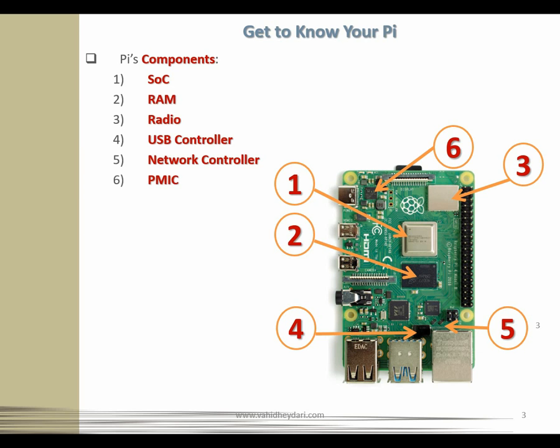The second component is RAM — random access memory — another small black plastic square chip. It holds what you are doing while you're working with your Pi. If you later want to save your work, that is going to be written to your micro SD memory card. We have two types of memory: volatile memory, such as RAM — you don't have access to its content after you reboot — and non-volatile memory, such as micro SD, where you save your work and it's retrievable later.